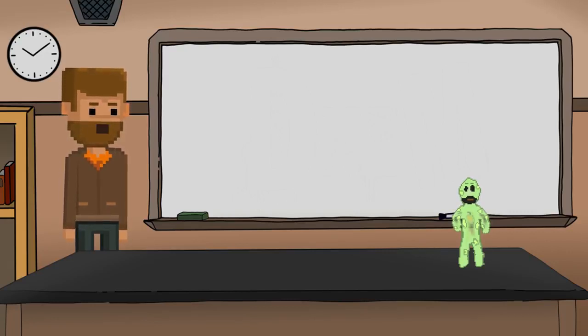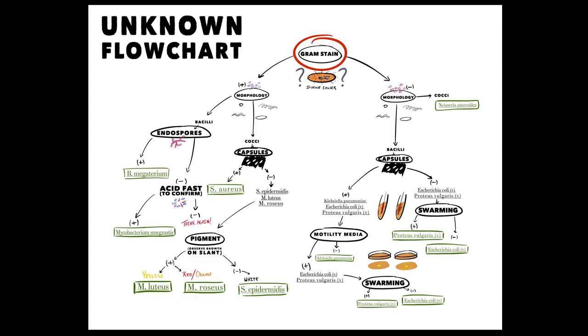Here's an animated example of what could happen and what you're supposed to do. We'll start our test with a Gram stain. Let's say our Gram stain came out negative. Now we can safely ignore the positive half of the flowchart.